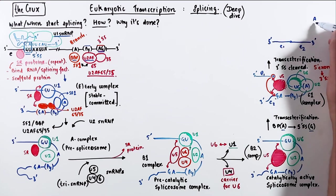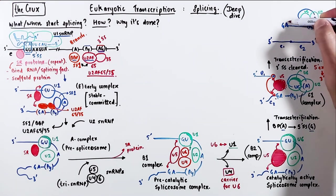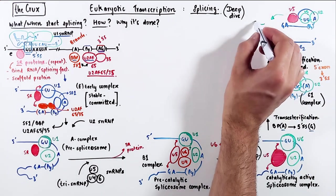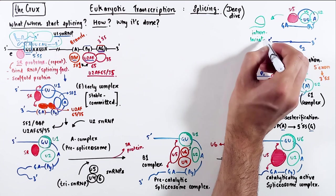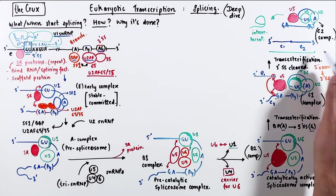and the intron is removed, but it is still bound to the snRNPs. This intron structure looks like a lasso or a lariat, and that's why this is called the intron lariat. And this complex, where the lariat is still attached to the snRNP, is called the catalytic 2 complex.